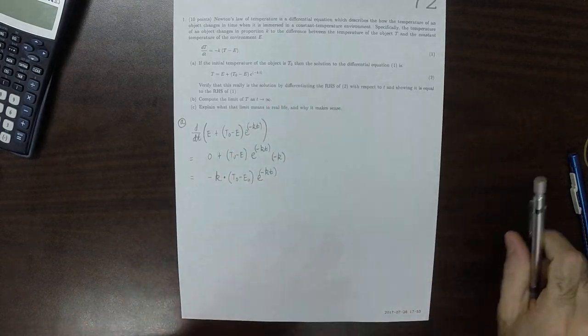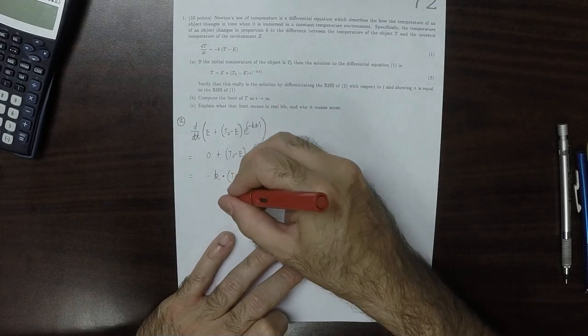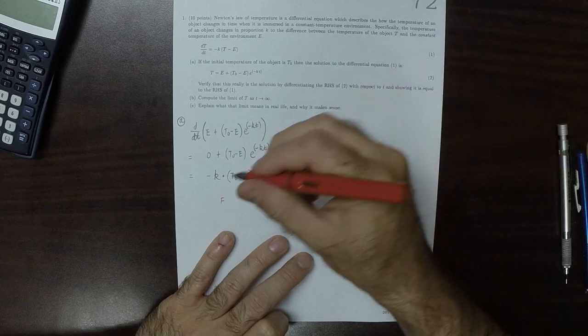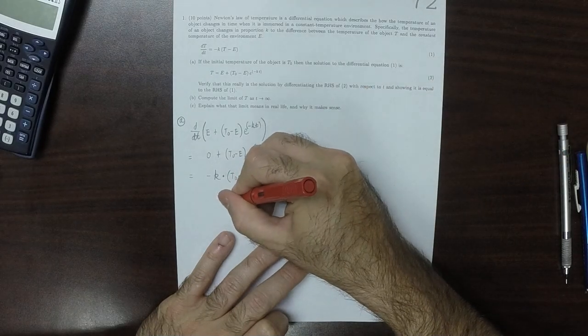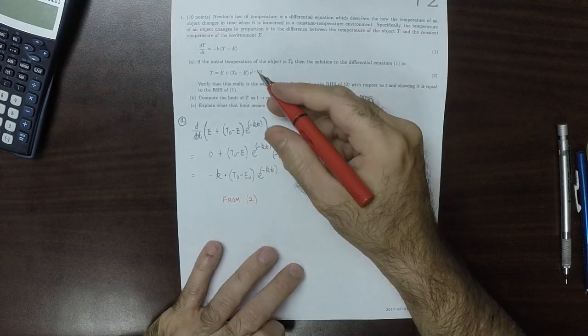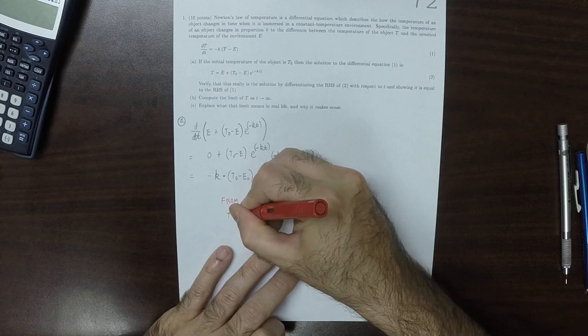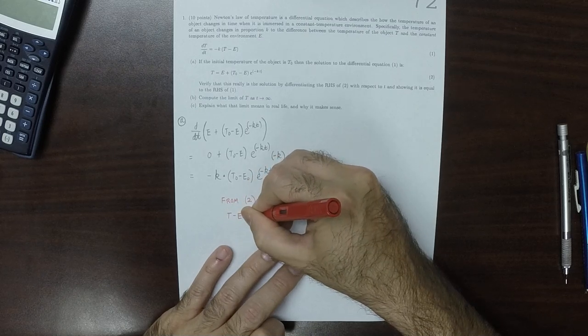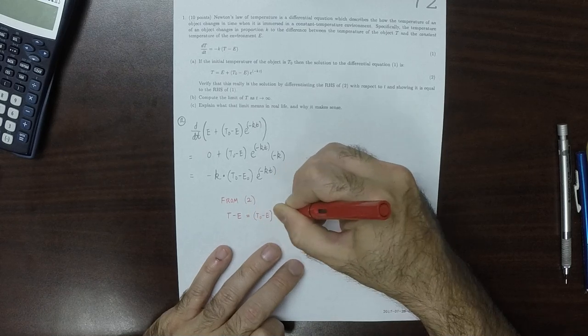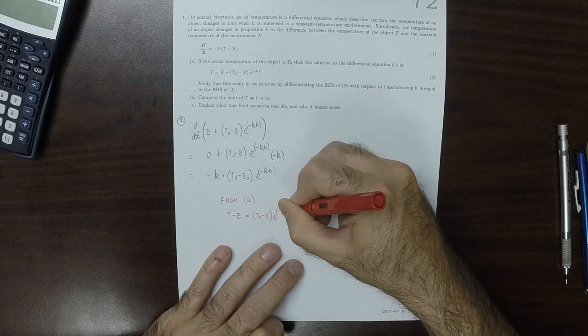Now, because of equation 2 - from equation 2, if we move the e to the other side, we can see that t minus e is t0 minus e exponential of negative kt.